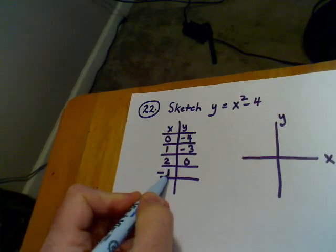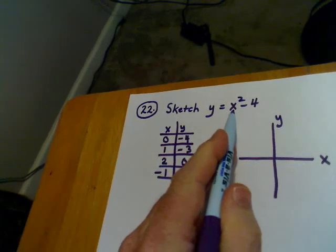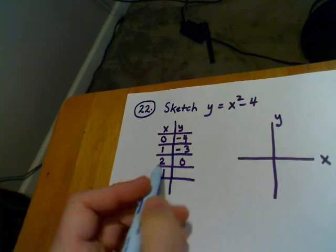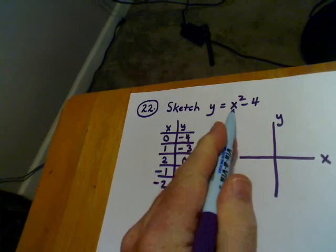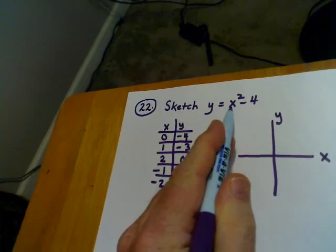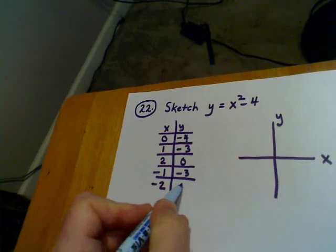Let's put in a negative 1. Negative 1 squared is 1, 1 minus 4 is negative 3. Let's put in a negative 2. Negative 2 quantity squared is 4, 4 minus 4 is 0.